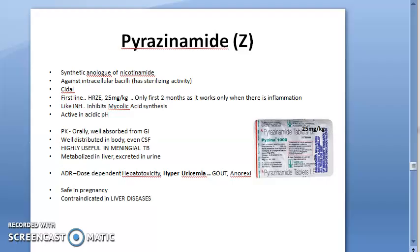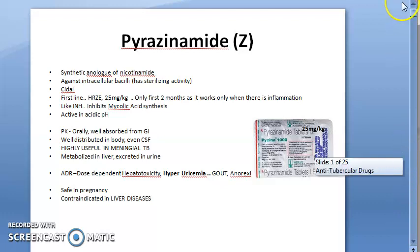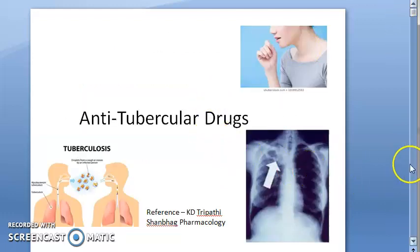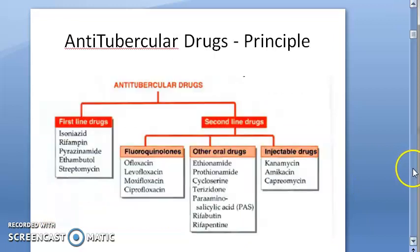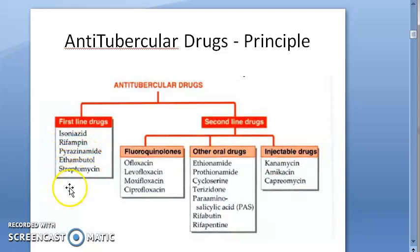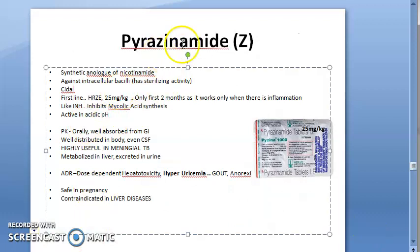Hello, are you ready for the pyrazinamide video? Currently we are looking at anti-tubercular drugs. The first line drugs — we have seen isoniazid and rifampin. Now we are moving on to pyrazinamide, ethambutol, and streptomycin. All three we'll try to cover. Pyrazinamide is represented as Z.